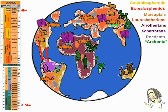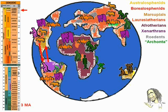The marsupials arrive in North America, in the example of the opossum. While the Laurazatherians reach South America as cats, dogs, bears, deer, horses, tapirs, and camels in the form of llamas, and others. Elephants also came to South America. On the other hand, giant sloths reach North America.